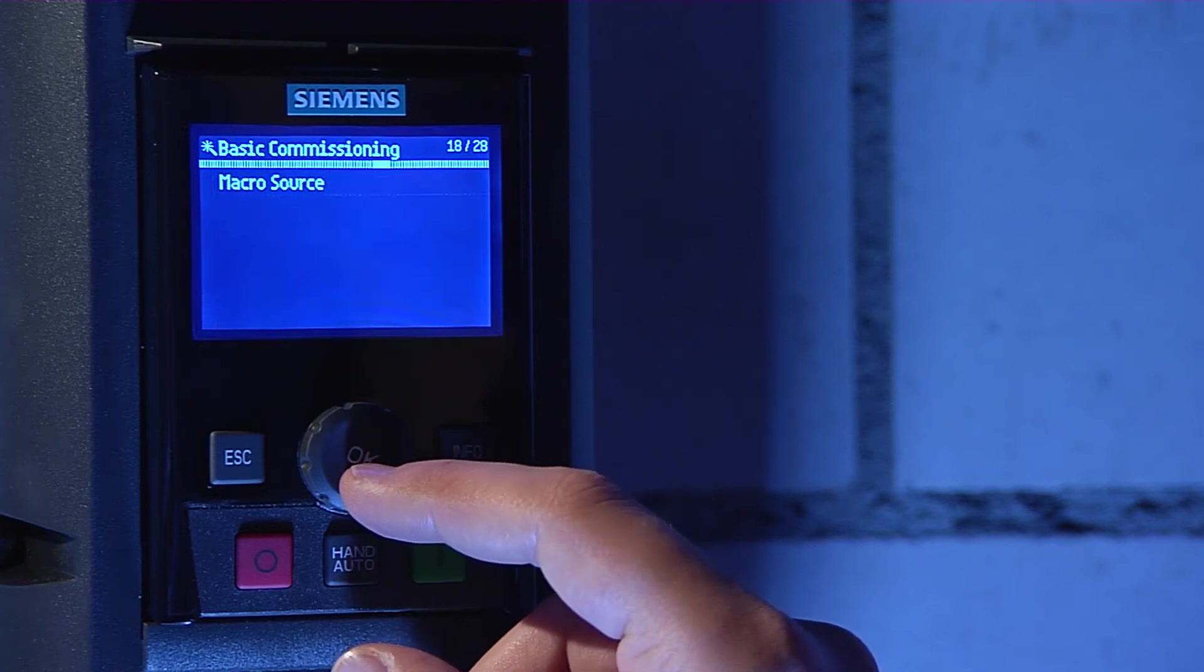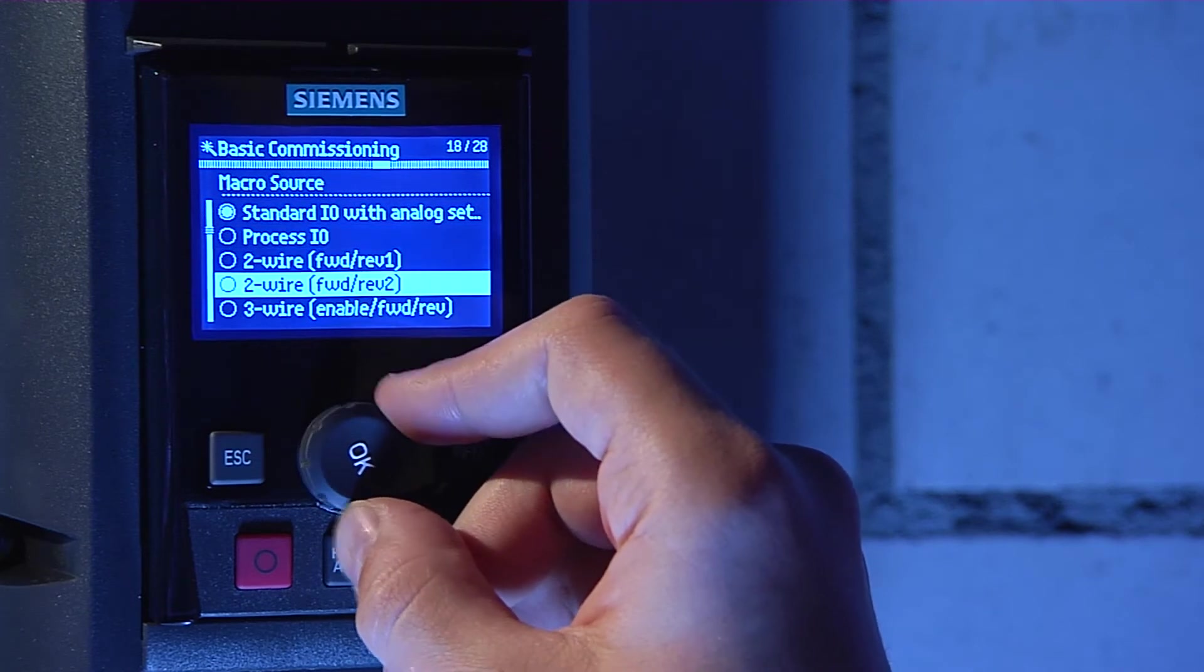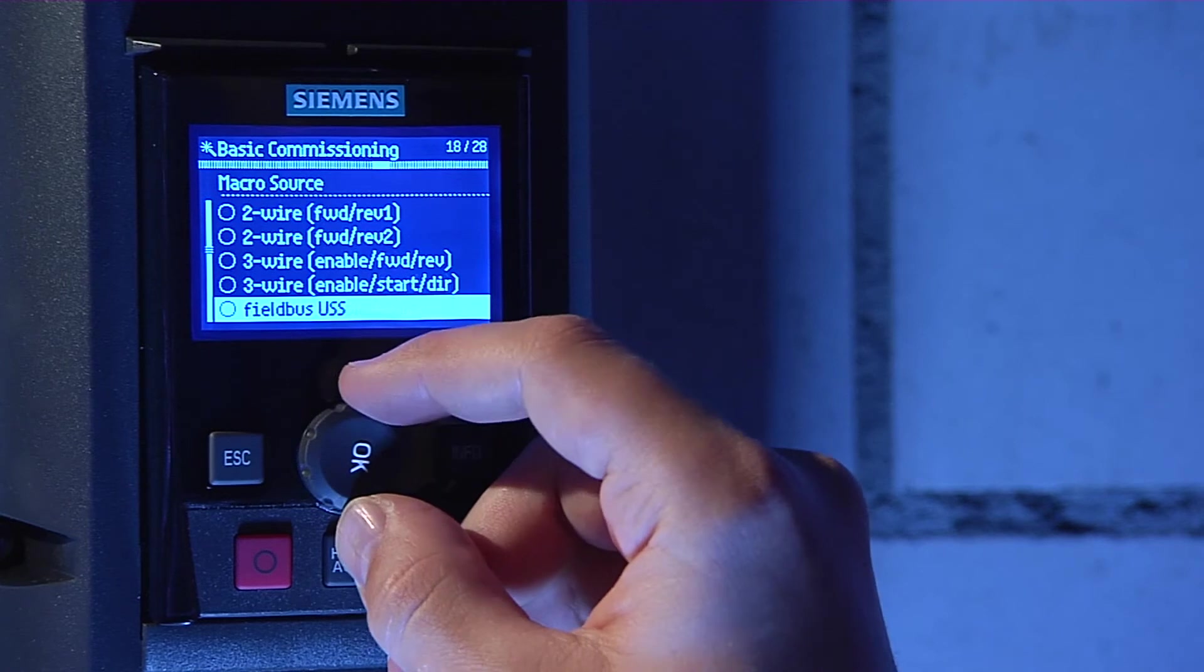When prompted for the macro, select Modbus RTU Fieldbus at the bottom of the list. This macro will preset the drive for fieldbus communication.